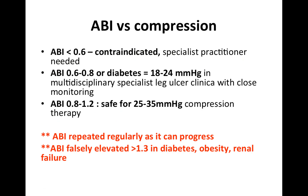There is a balance between ABI and compression stockings. If ABI is less than 0.6, do not apply compression stockings — the patient needs treatment to improve their ABI. If ABI is between 0.6 and 0.8, or the patient has diabetes, consider lower compression of 18 to 24 mmHg in a multidisciplinary specialist leg ulcer clinic with close monitoring. Compression of 25 to 35 mmHg is safe if ABI is 0.8 to 1.2. ABI should be repeated regularly. Note that ABI above 1.3 may be falsely elevated, especially in diabetes, obesity, and renal failure.